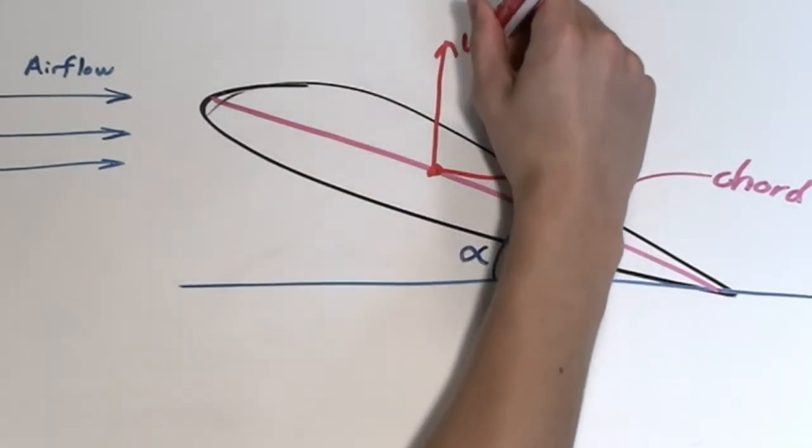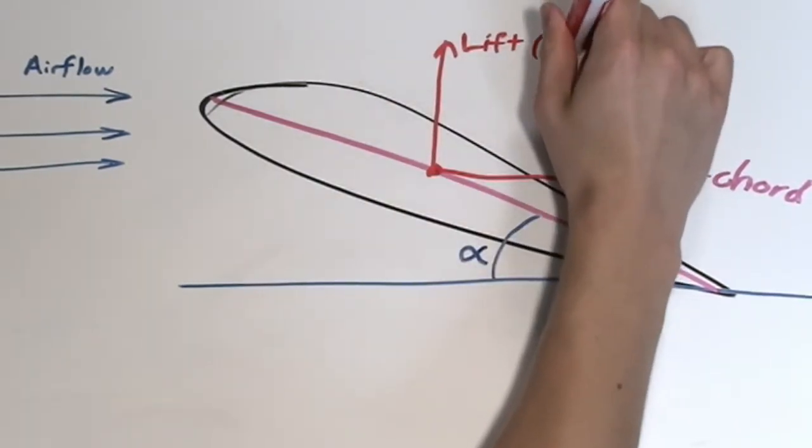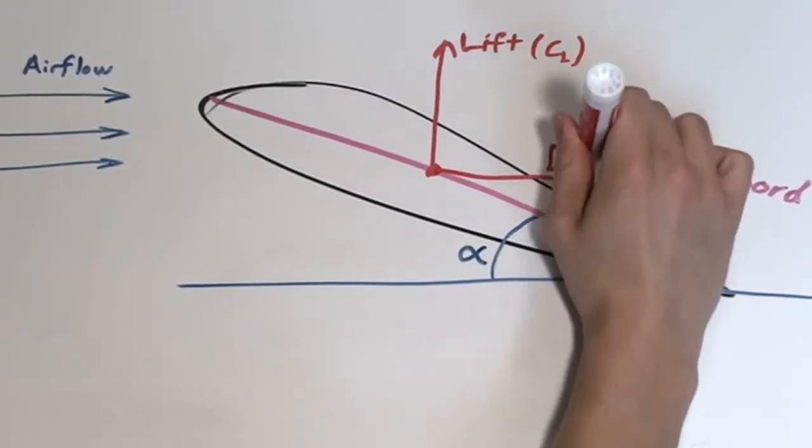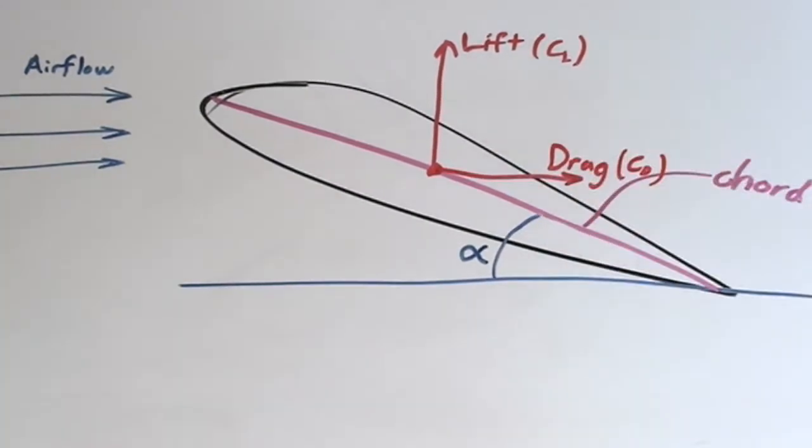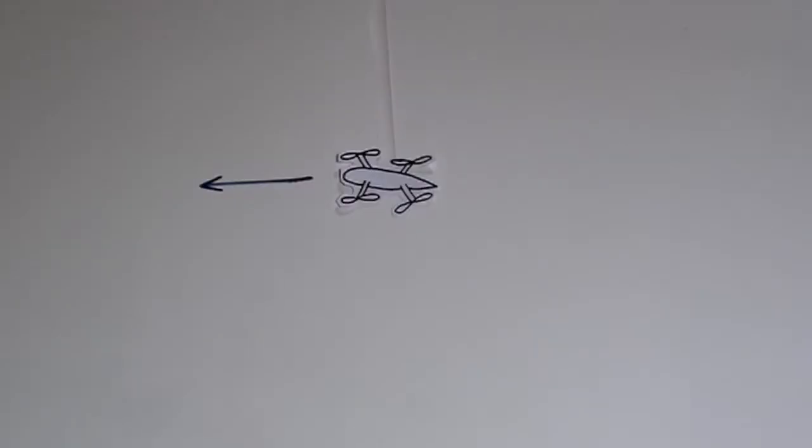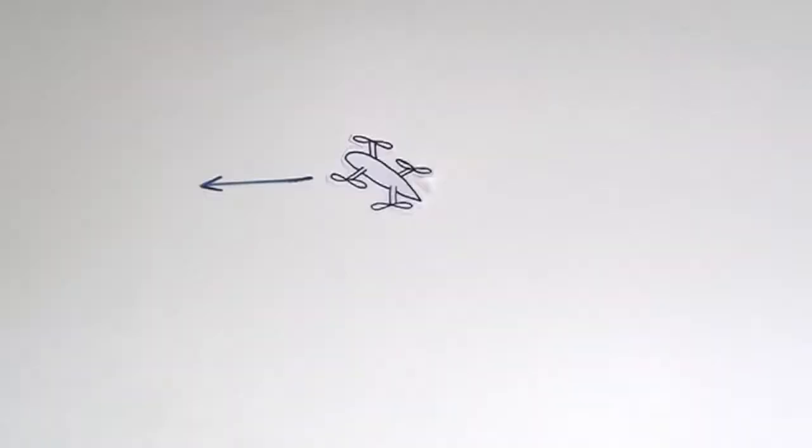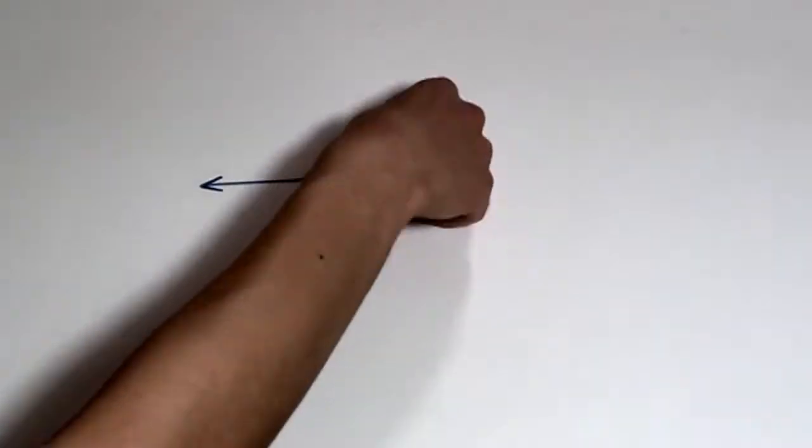Based on varying the angle of attack of the airfoil, the ratio of the lift coefficient to the drag coefficient, CL over CD, can be observed with the goal of increasing this value. To understand which angle of attack is the best choice, the lift and drag components for each angle will be calculated.